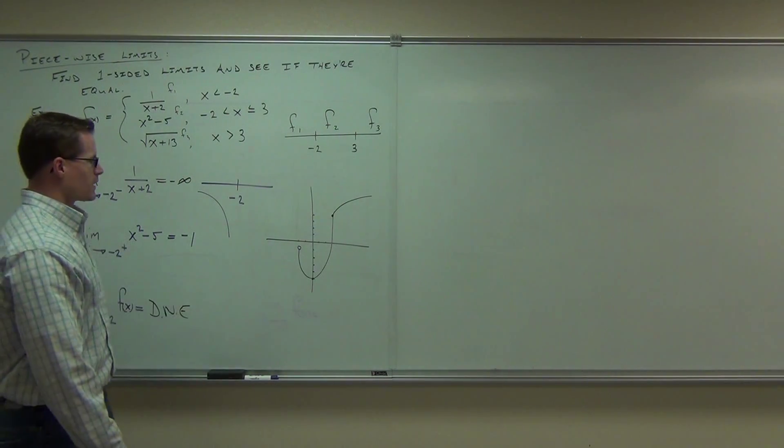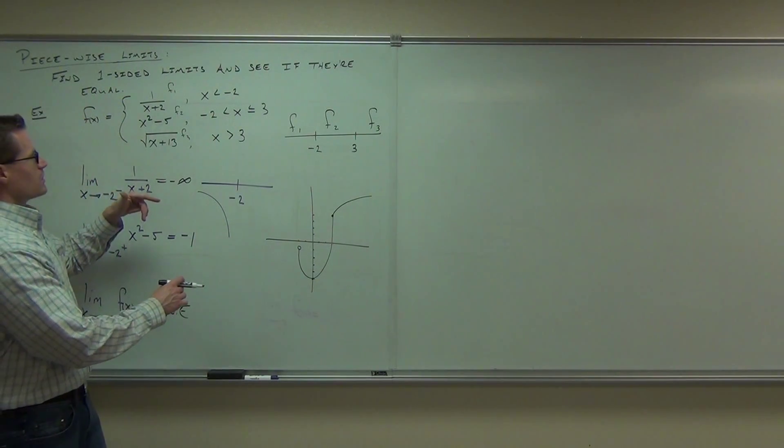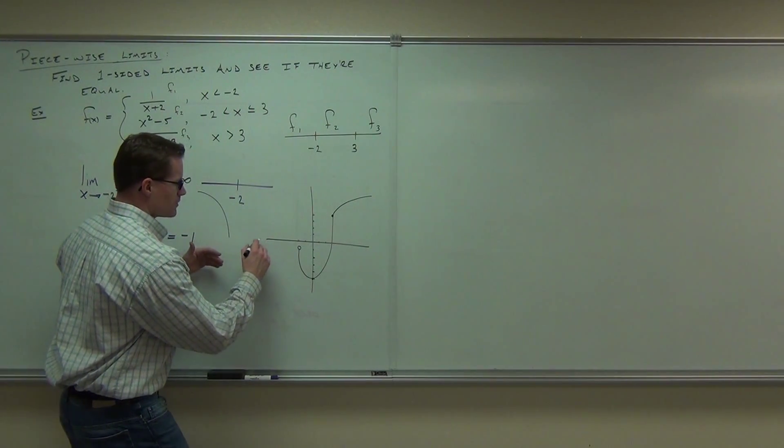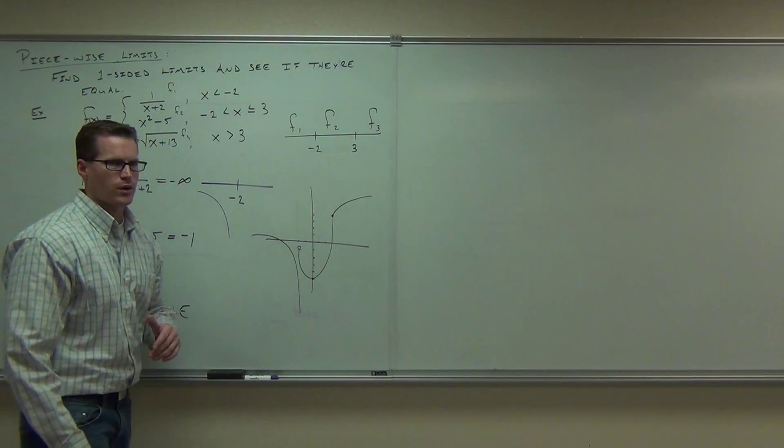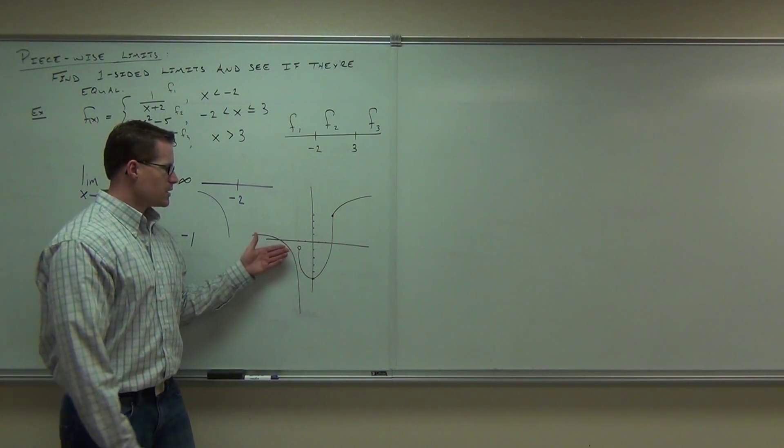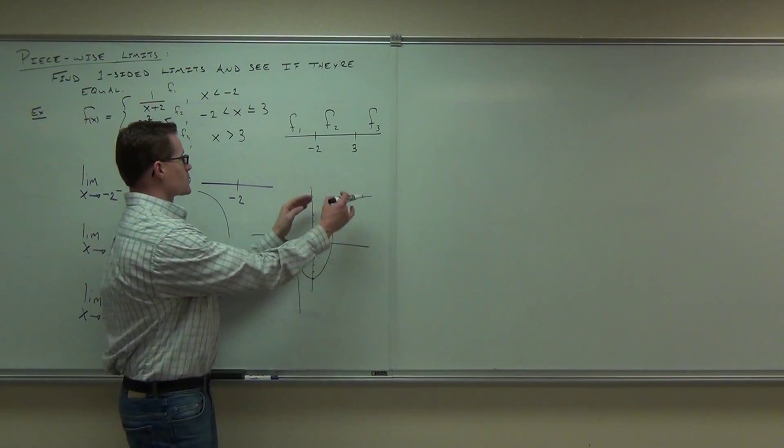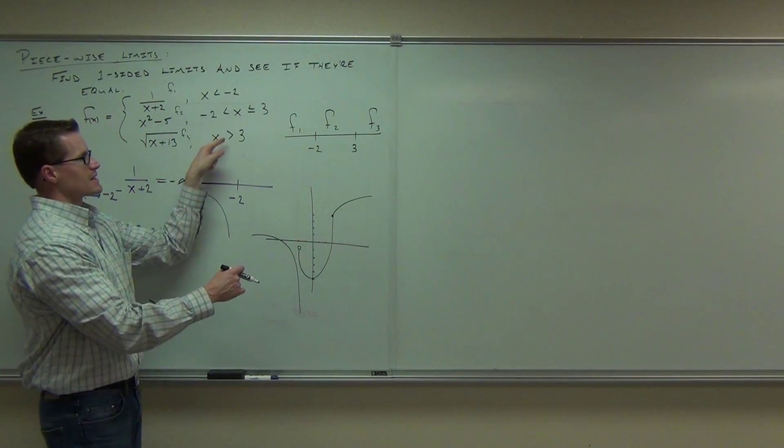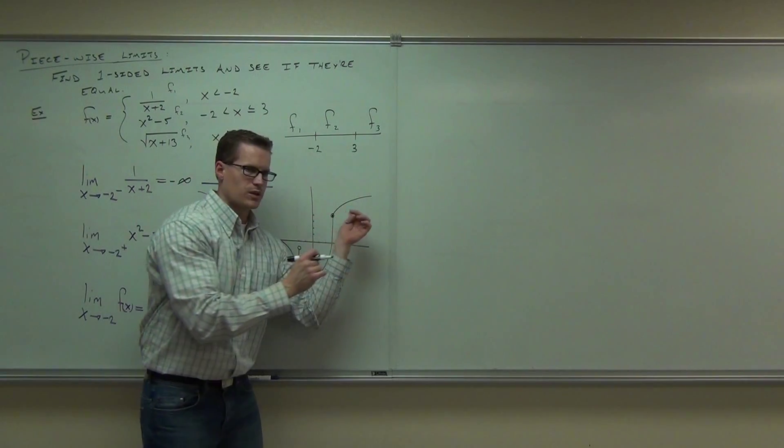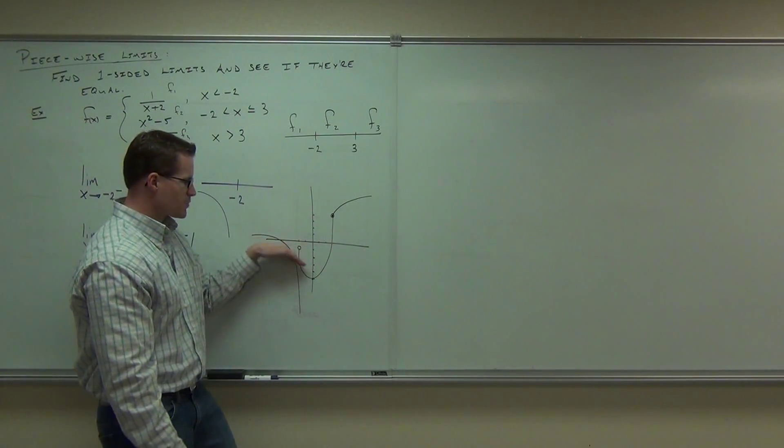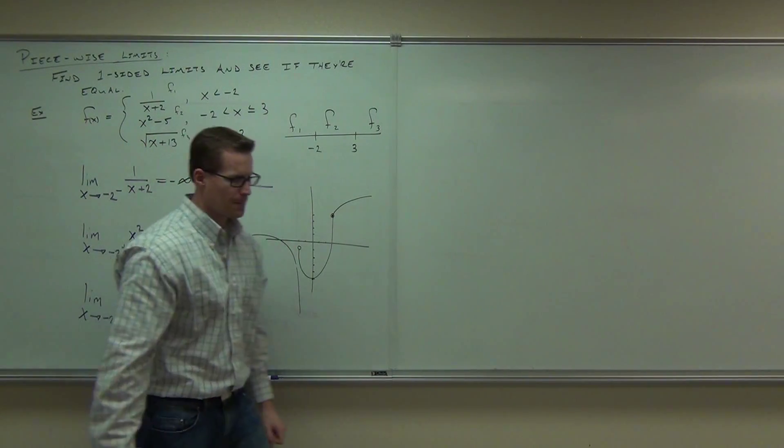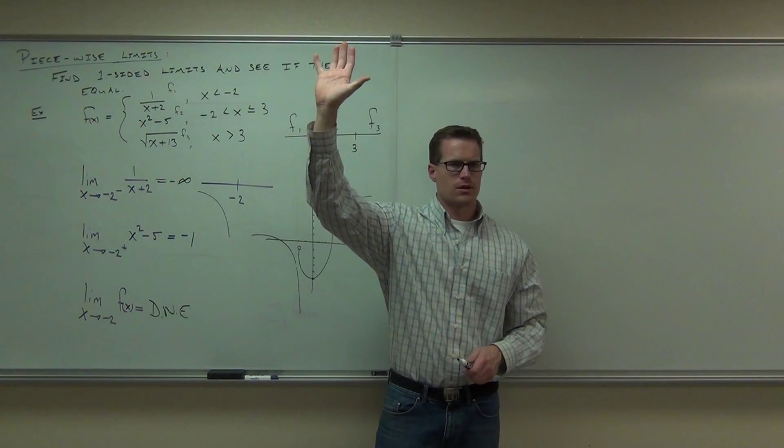Then from there on out, we have the square root of x plus 13, which starts at 4 and takes off something like that. And then we have this 1 over x plus 2, which goes like that at that point. Does the limit exist as we approach negative 2? No. Does the limit exist at 3? Absolutely, because that was closed off. This part would have had the open circle around it, but it's filled in by that point. Limit exists there? Absolutely. Limit exists here? No. Negative infinity and a value.